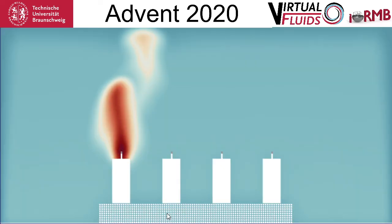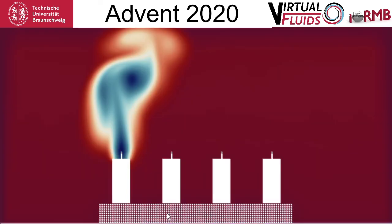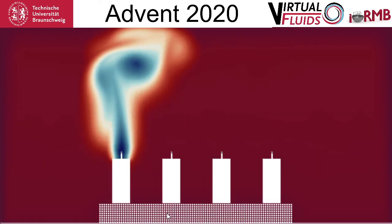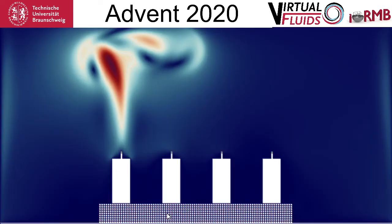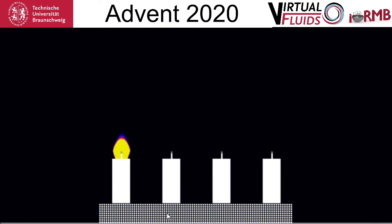Let us look at the temperature. Temperature is rising. It consumes oxygen — red is oxygen, blue is no oxygen. We can have a look at the velocity and see whether it is still burning. Happy first Advent, everybody.